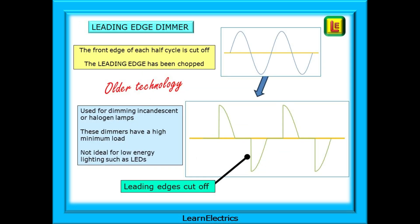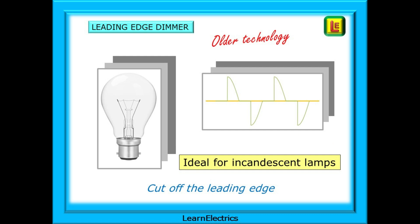Older technology dimmer switches are still in use today, and they are what we call leading-edge dimmers. The front edge of each half cycle is cut off — the leading edge has been chopped off. This type of dimmer switch is used for dimming incandescent or halogen lamps, and the type of technology used means that these dimmers have a high minimum load, and as such, they are not always ideal for low-energy lighting such as LEDs. Leading-edge dimmers will chop off the leading edge. This simpler-to-manufacture technology is ideal for incandescent lamps, as we shall see.